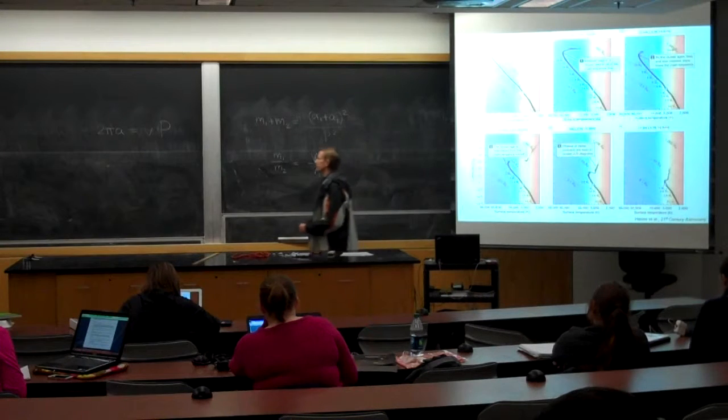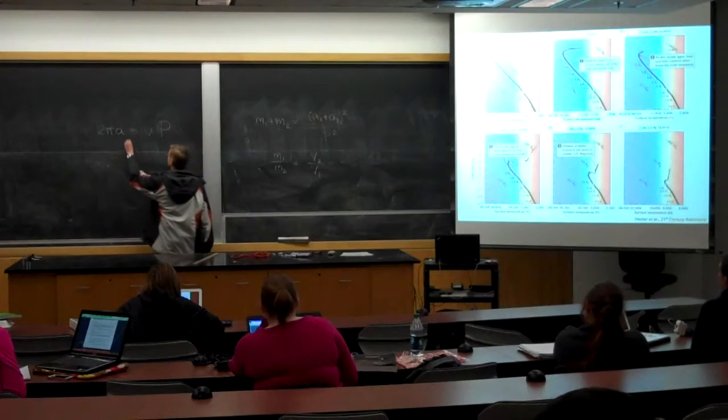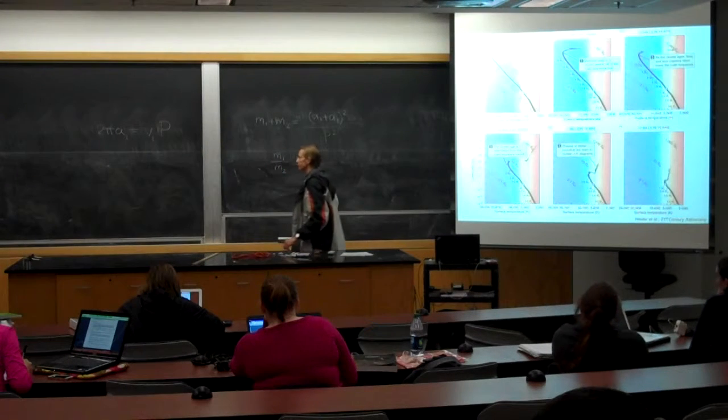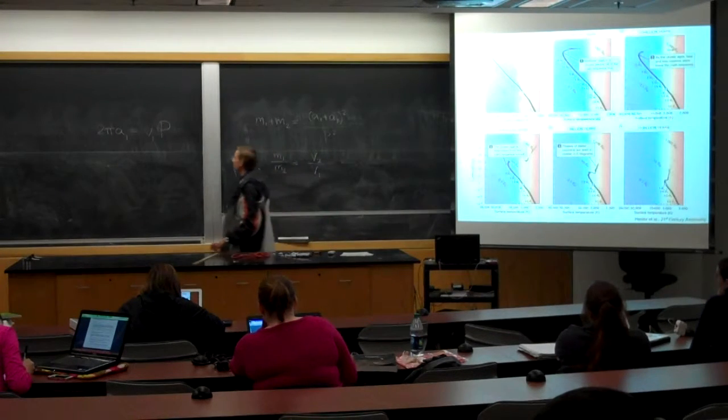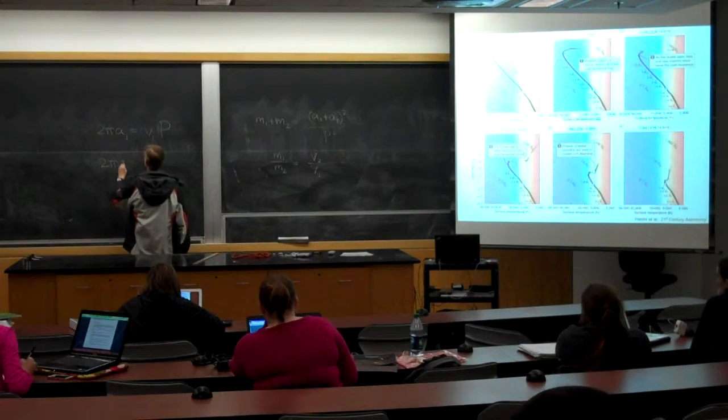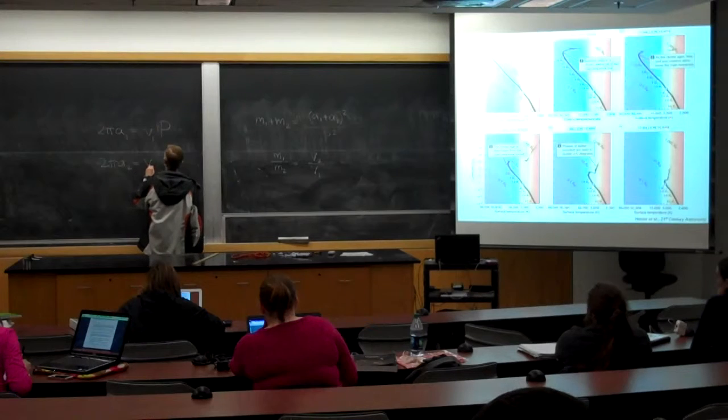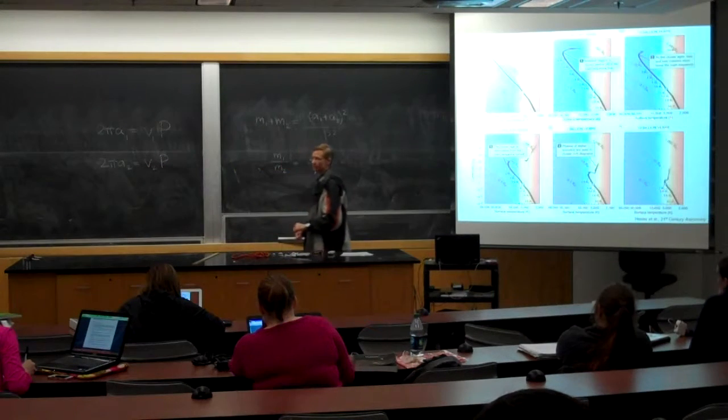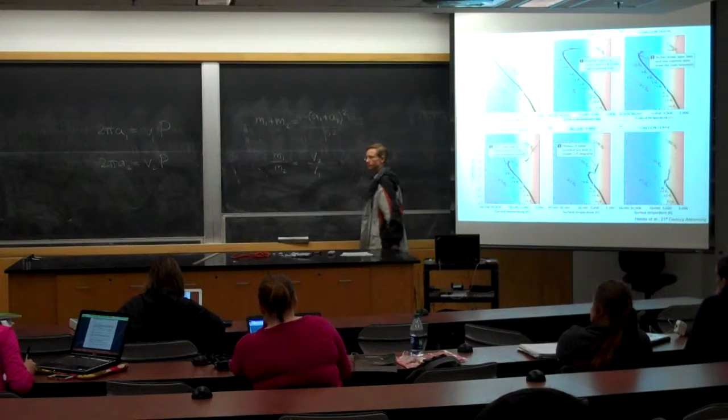Yeah, the period is the same for both stars. So really, there's two relations here. In other words, the Doppler shift for star 1 tells me how fast it's moving. So 2πA1 is v1 times the period. And for the other star, its Doppler shift tells me how fast it's moving. So 2πA2 is v2 times the period. Are those all in the same units?